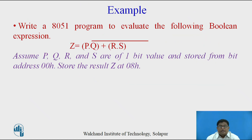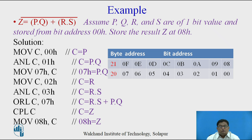Now, write an 8051 program to evaluate the following Boolean expression: Z = (complement of P) · Q + R · S. Assume that P, Q, R, and S are one-bit values stored at consecutive addresses starting with 00h, and store the result Z at address 08h. You may pause the video and write the program. Here is the program.